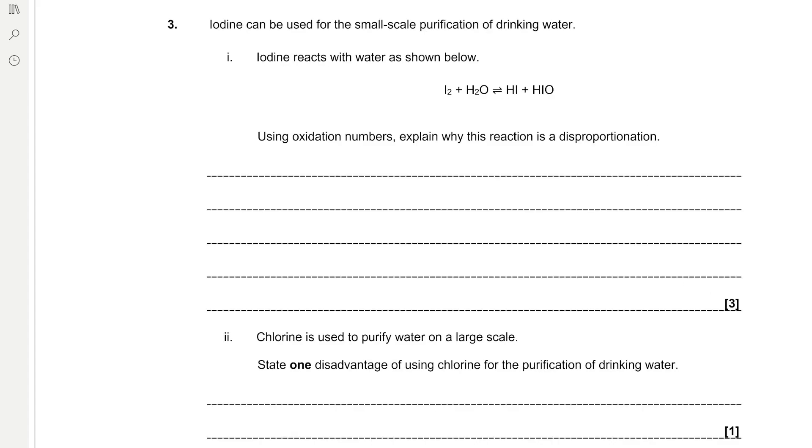Iodine can be used for the small scale purification of drinking water. Iodine reacts with water as shown below: I2 + H2O → HI + HIO. Using oxidation numbers, explain why this reaction is a disproportionation. So first we need to remember our definition of disproportionation, which is when the same element is both oxidized and reduced in the same reaction at the same time. So that means that iodine must be both oxidized and reduced.